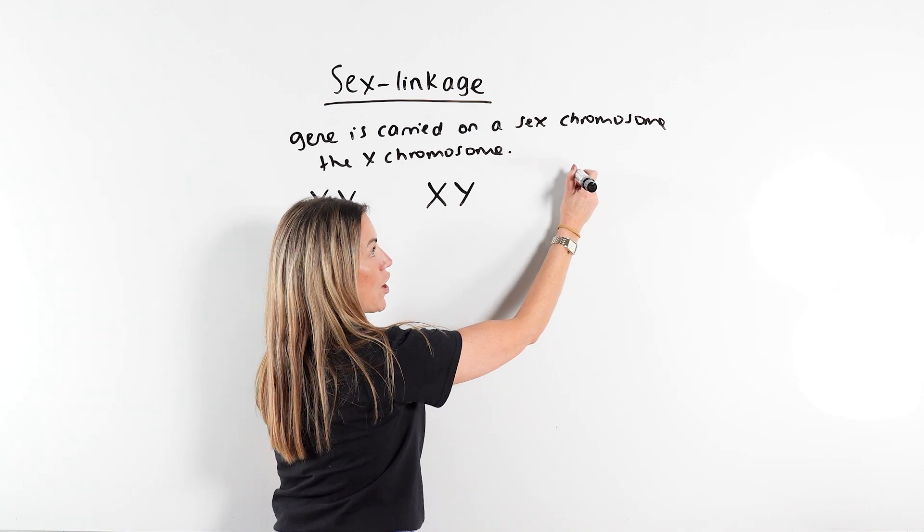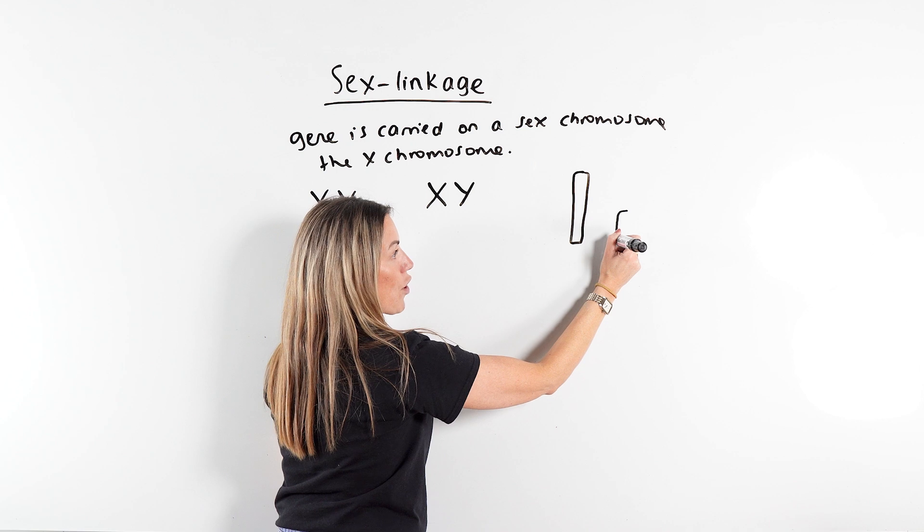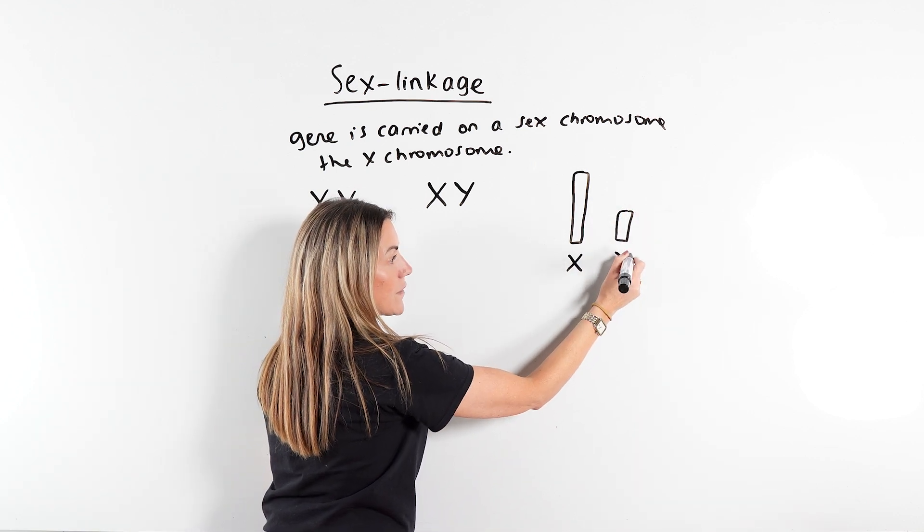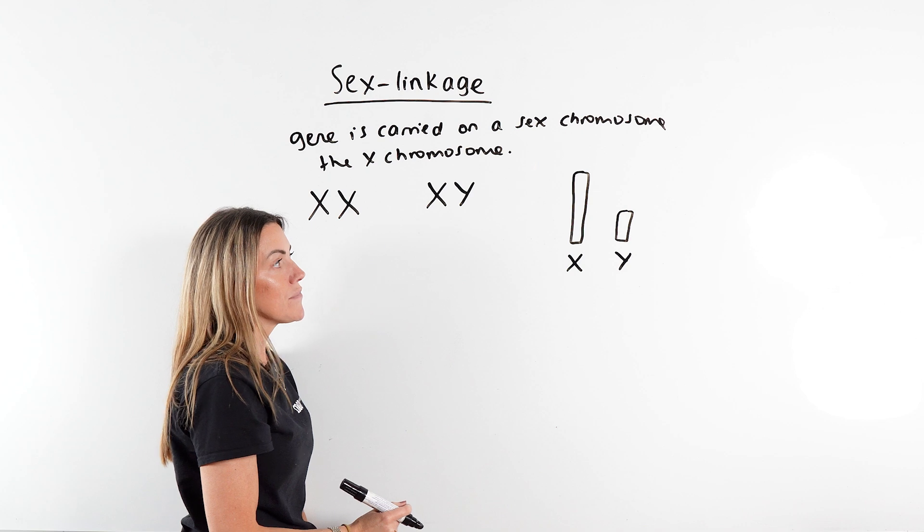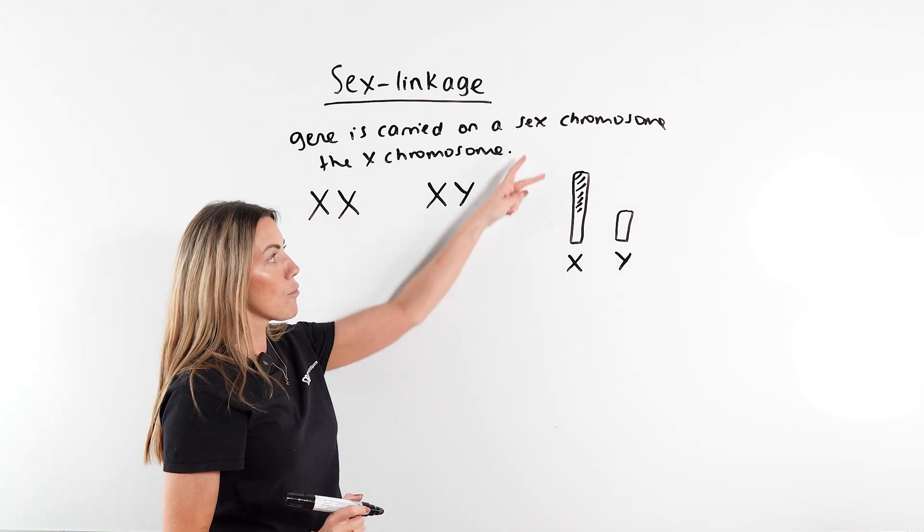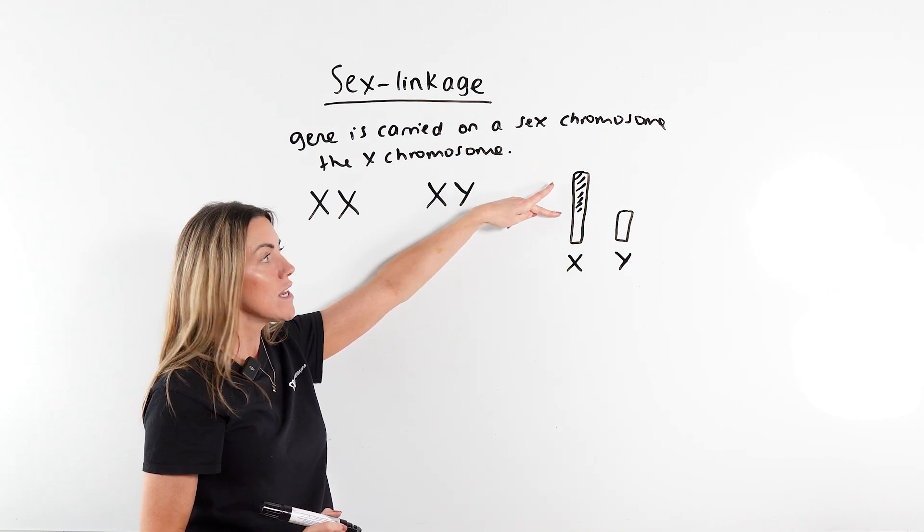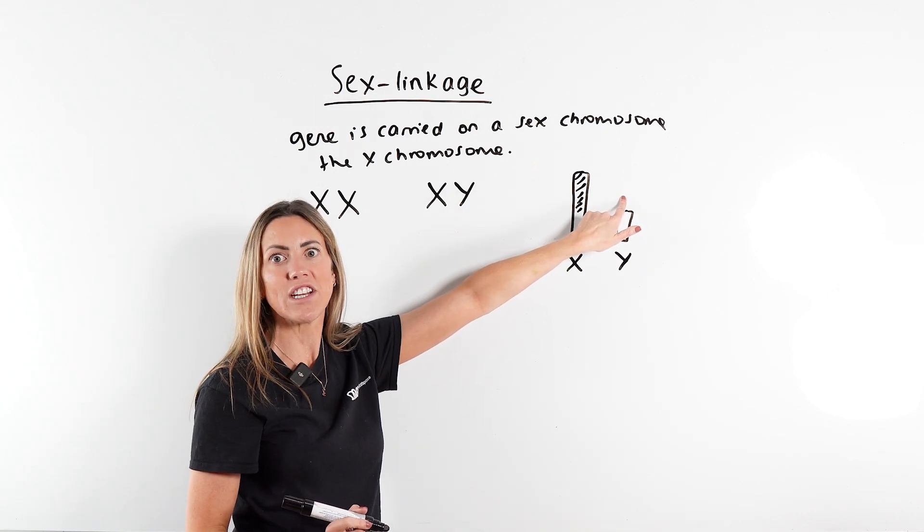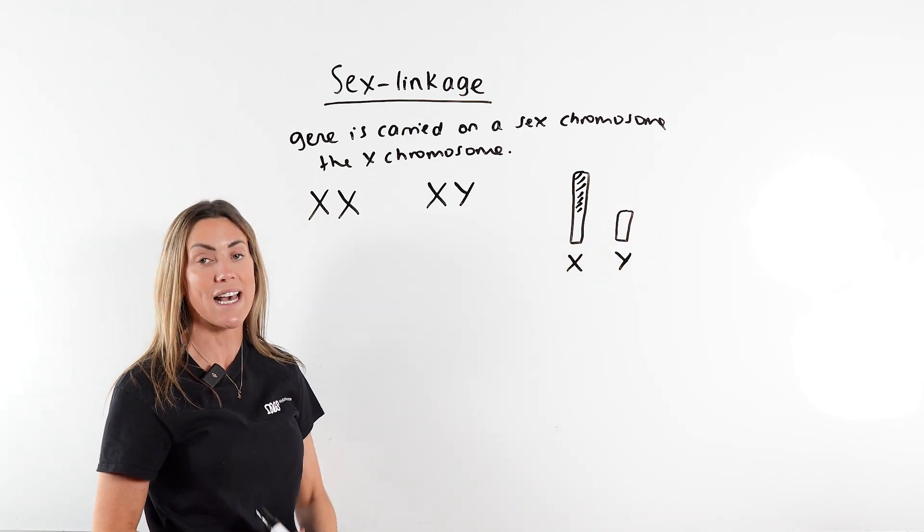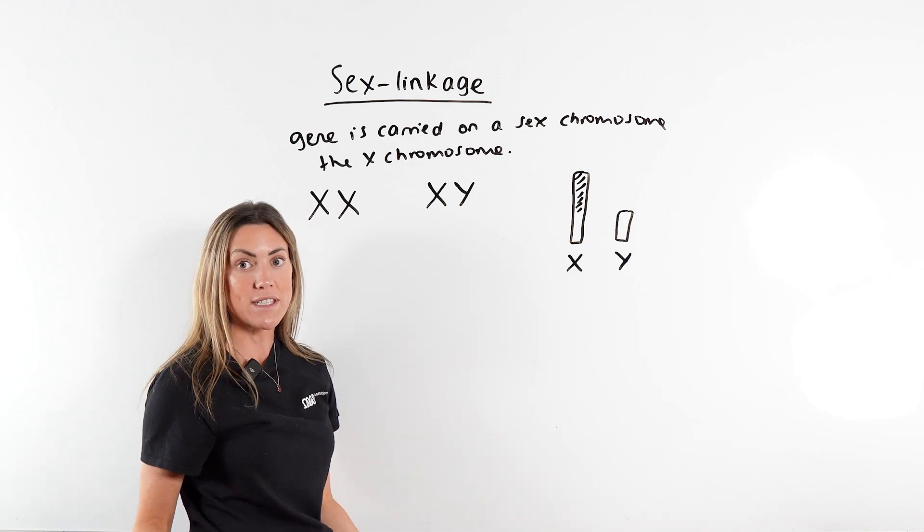Now the X chromosome, if I show you over here, the X chromosome is much larger than the Y chromosome. So this is my X and this is my Y. Because it's much larger, it carries many more genes. So all the genes that are carried on this portion of the X chromosome, you can see there's no corresponding gene on the Y chromosome, because the Y chromosome is far shorter and carries far fewer genes. These chromosomes are not the same size.